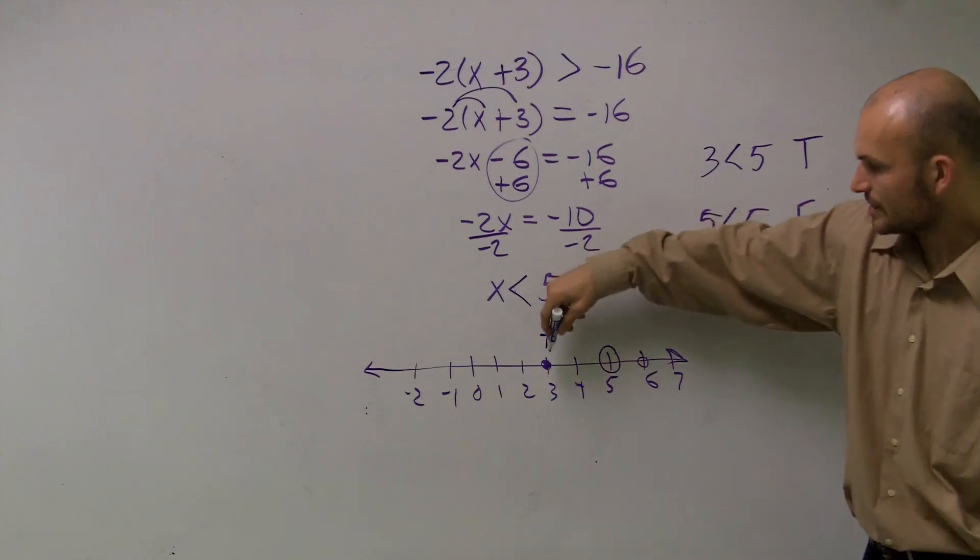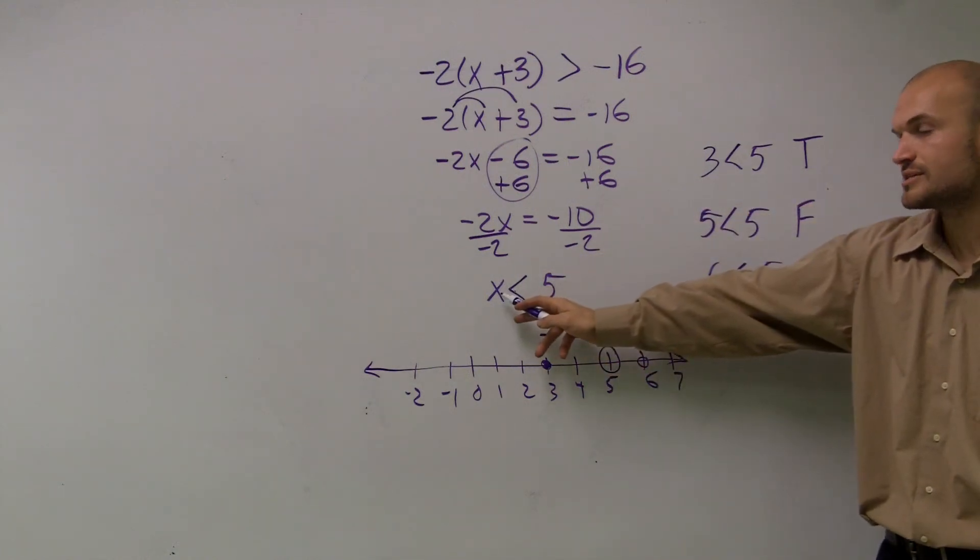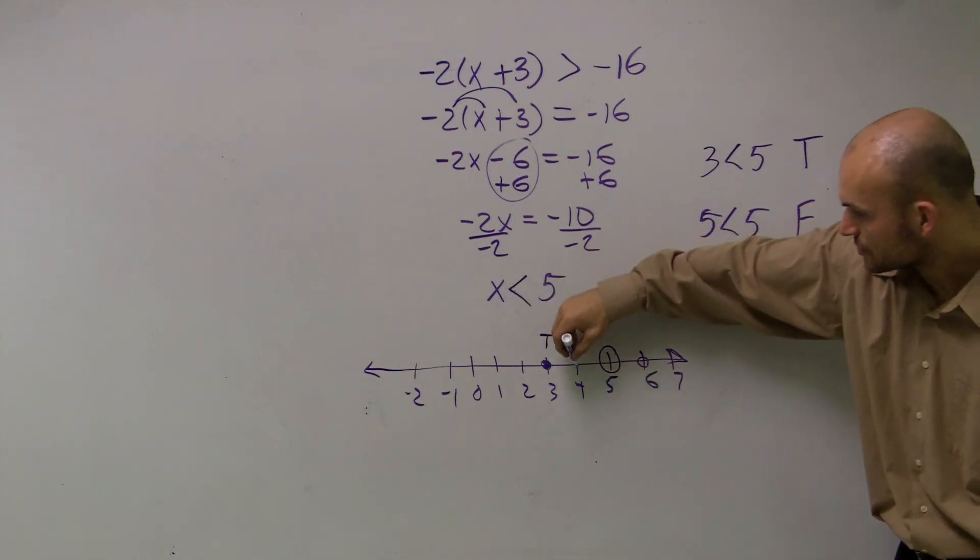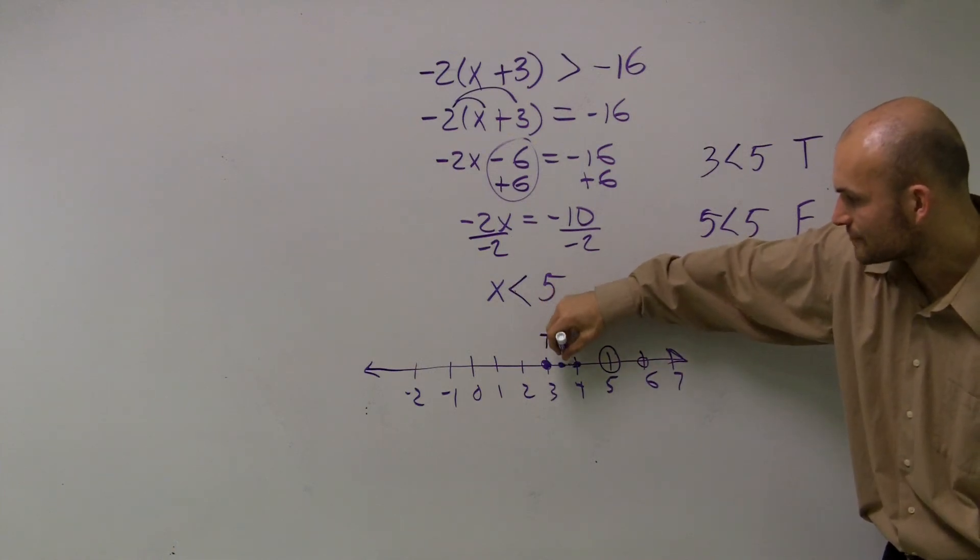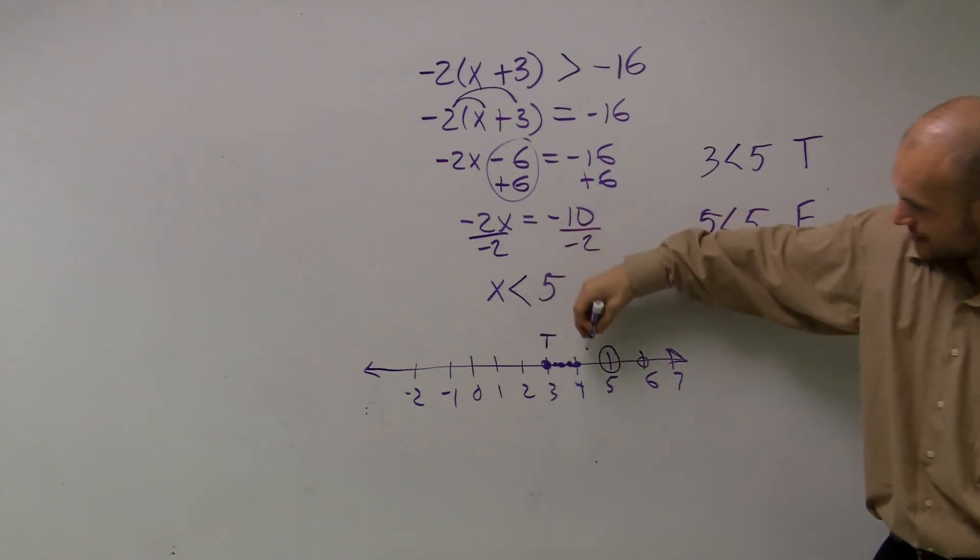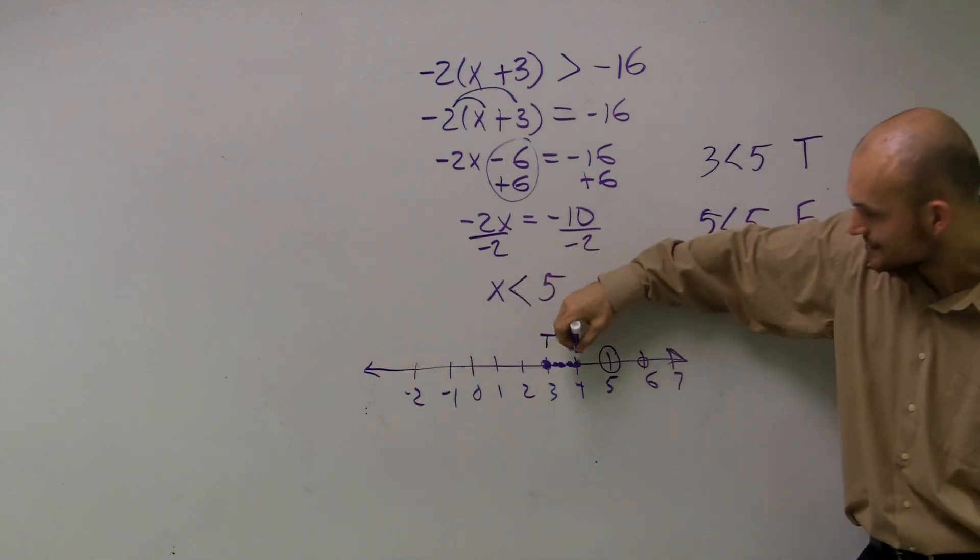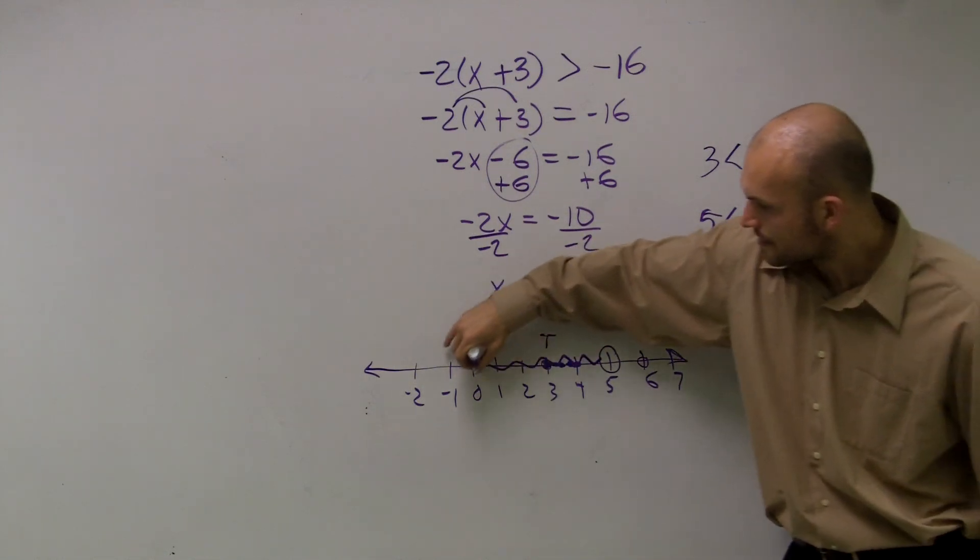Remember, all numbers less than 5 work: 4, 3.5, 3.75, 3.33. Instead of drawing all these individual dots, we can just draw a line this way.